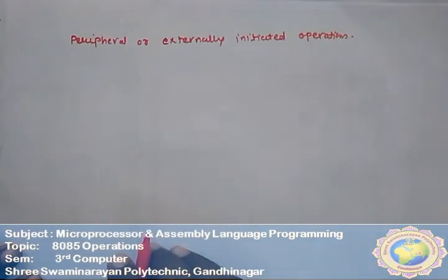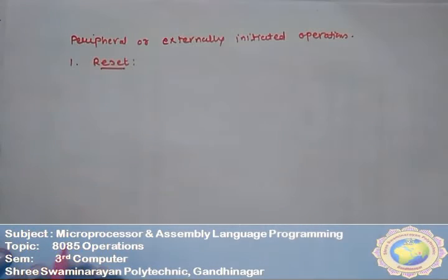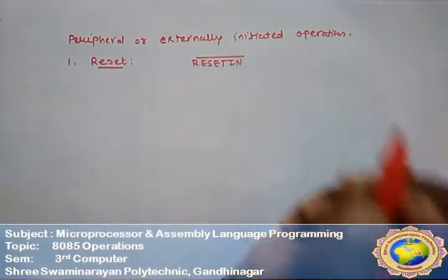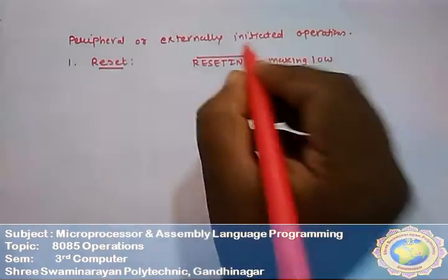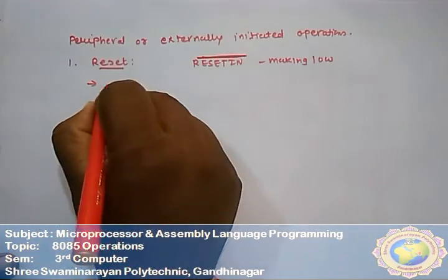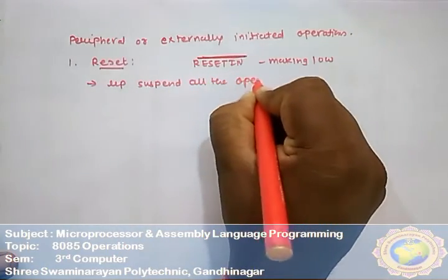Externally initiated operations: first is the reset, which you have already studied. This operation is initiated by making the reset-in signal low (as seen in the pin diagram). It is low-enable, meaning it is activated by giving a low signal. When the reset is activated, the 8085 suspends all internal operations — whatever work was being done is stopped.